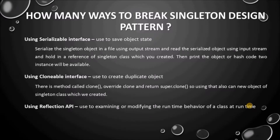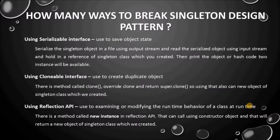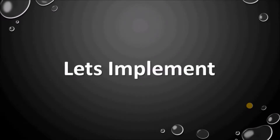Using Reflection API, which is used for examining or modifying the runtime behavior of a class at runtime. There is a method called newInstance in the Reflection API that can be called using a constructor object, and that will return a new object of the singleton class. Let's implement.